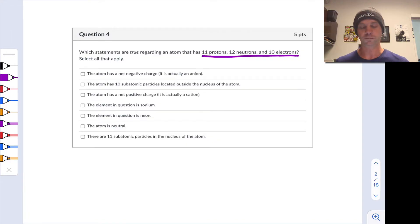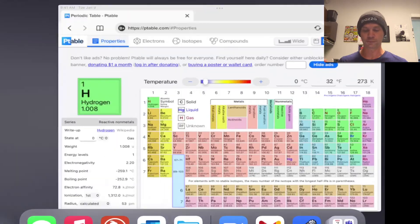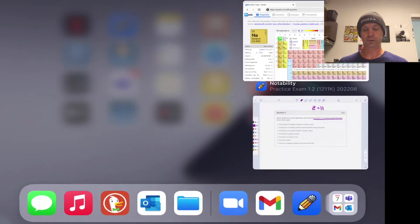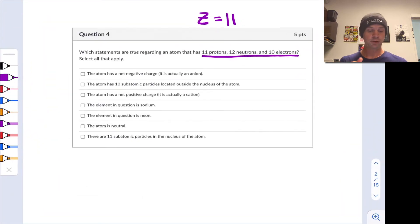The first thing I want to do is take a look at the number of protons and recall that corresponds to the atomic number. For this atom, the atomic number is 11. We can jump over to the periodic table and see that atomic number 11 corresponds to sodium. So this is an atom of sodium, and indeed we can check here the element in question is sodium. Now if the element is sodium, we can immediately rule out neon. The element cannot possibly be sodium and neon.